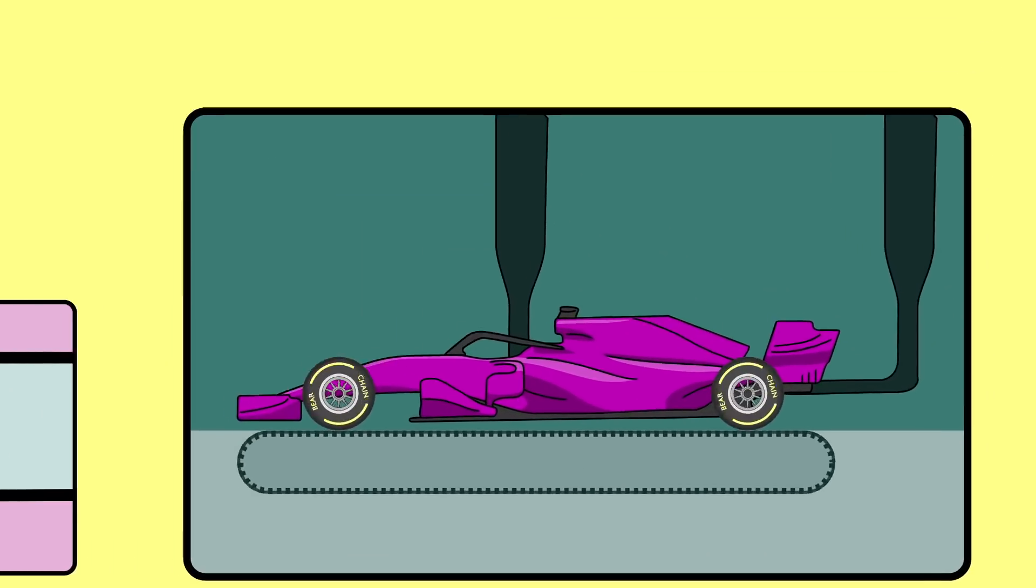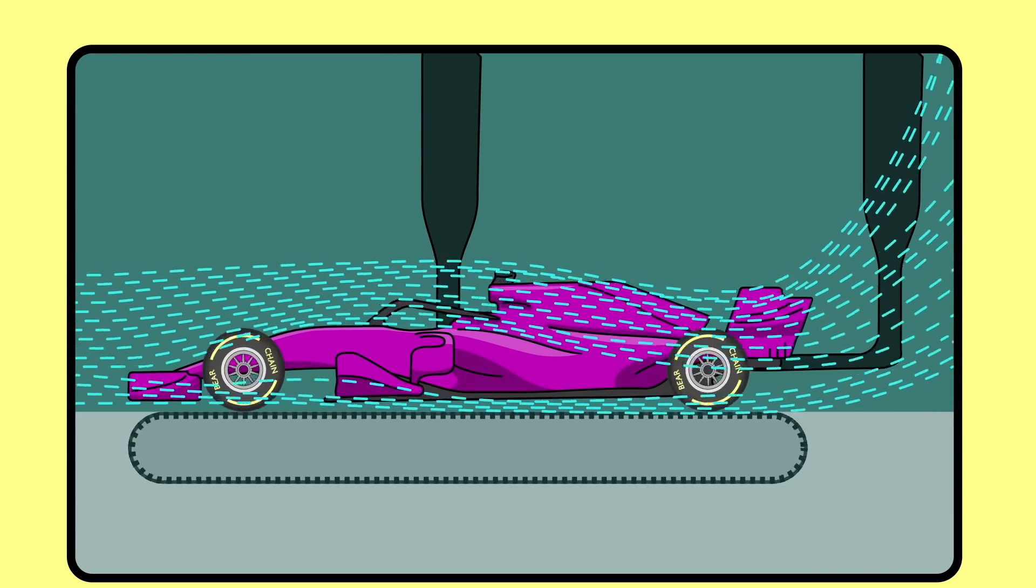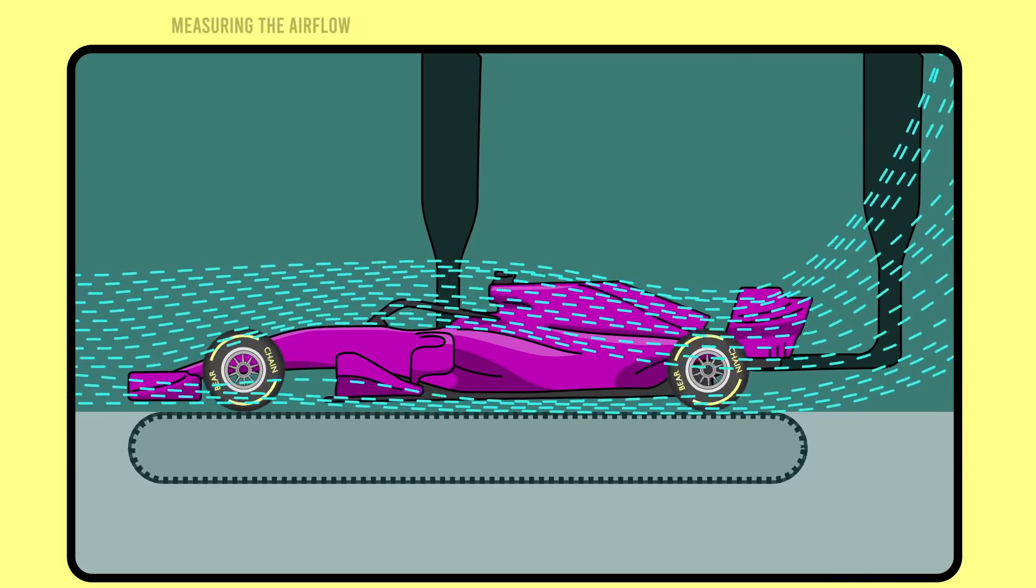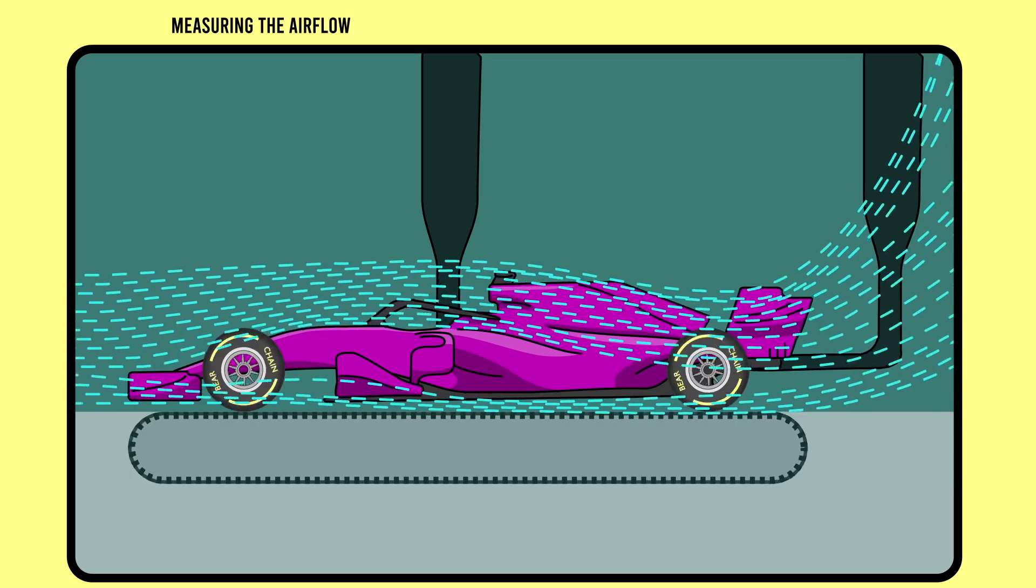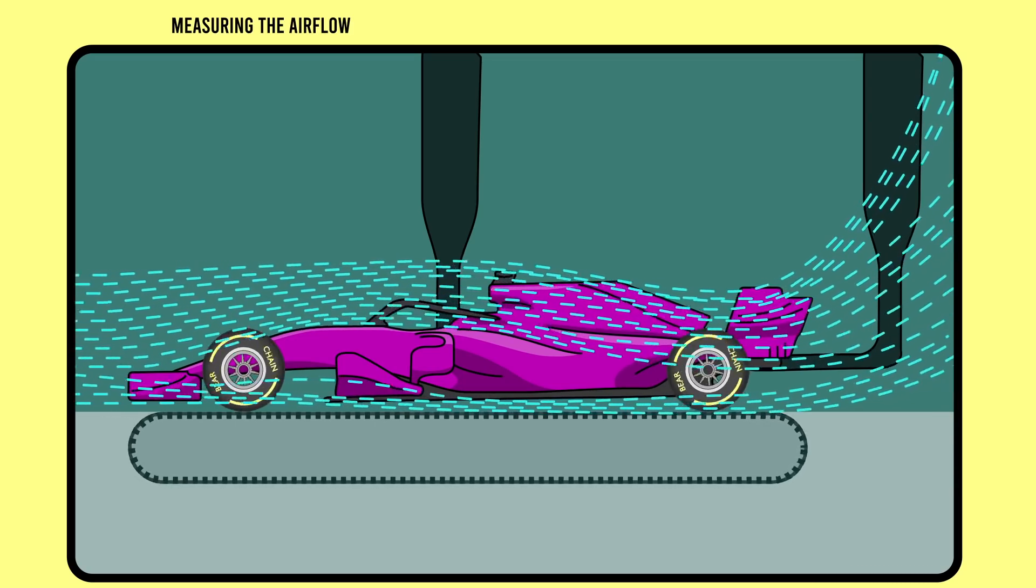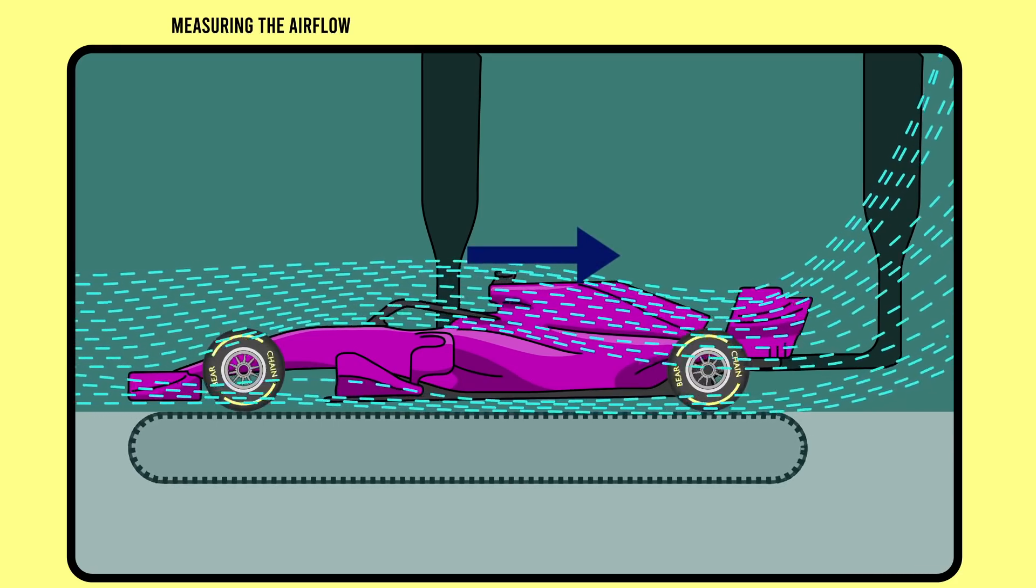So now we've got the car in the testing chamber with the wind breezing over it, simulating the car running on the track. So how do we take meaningful measurements? Well, one thing we need to measure is the airflow itself. The car has been deliberately designed to cut through the air in specific ways.